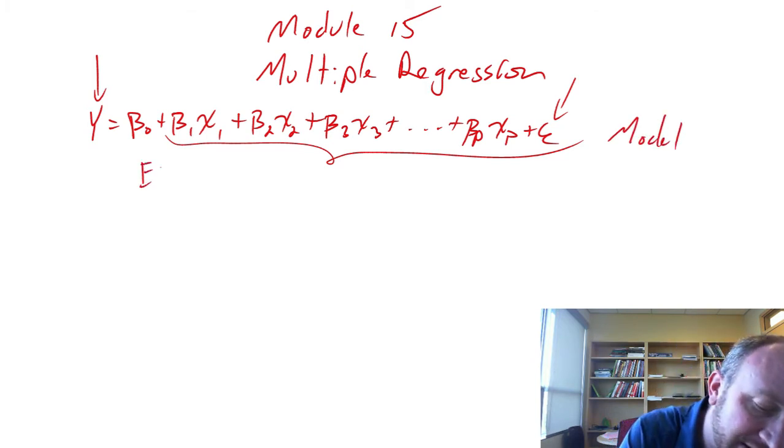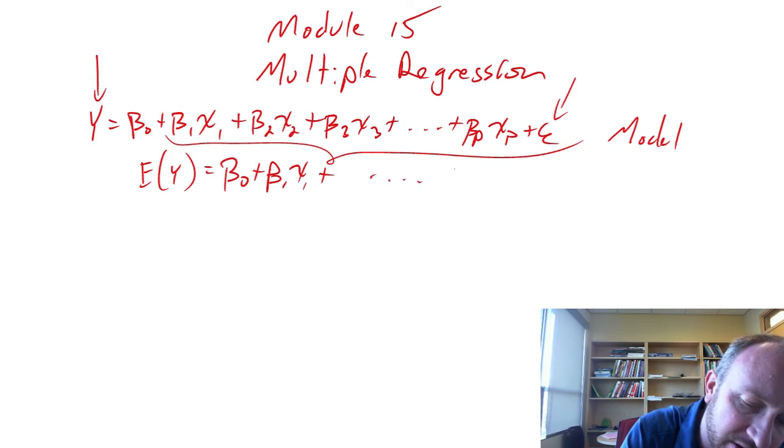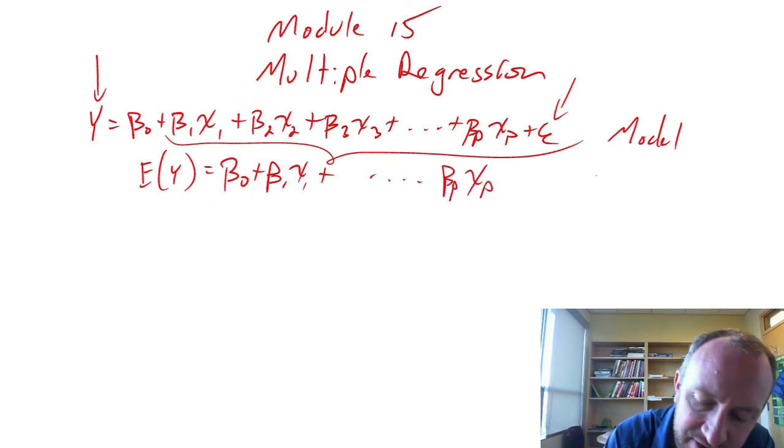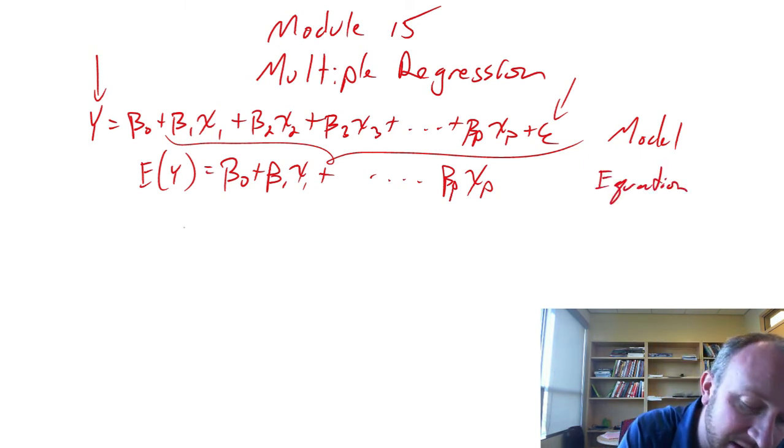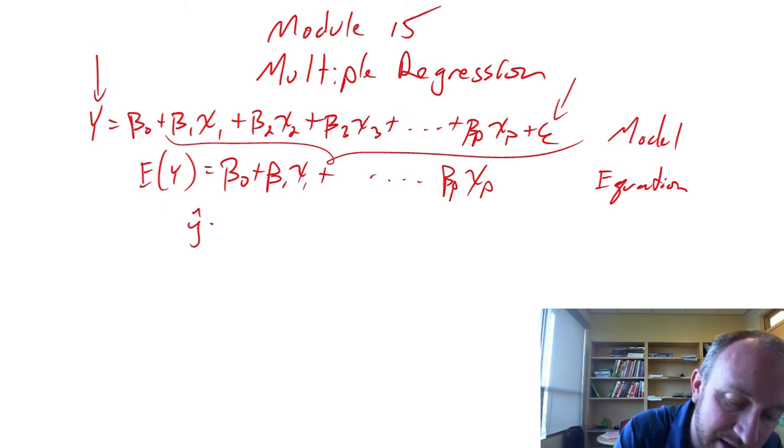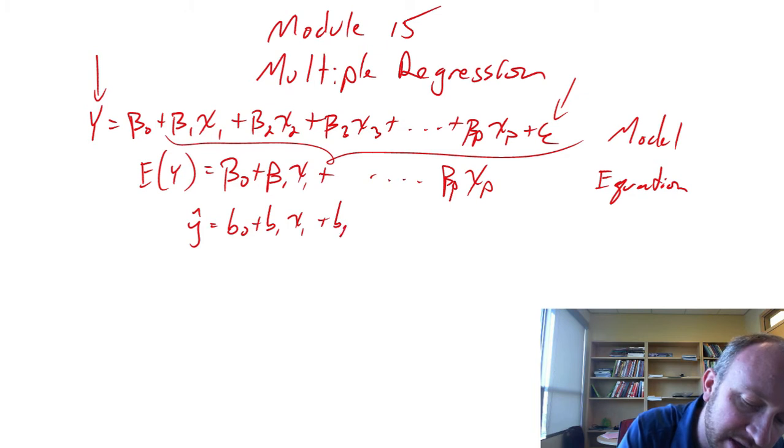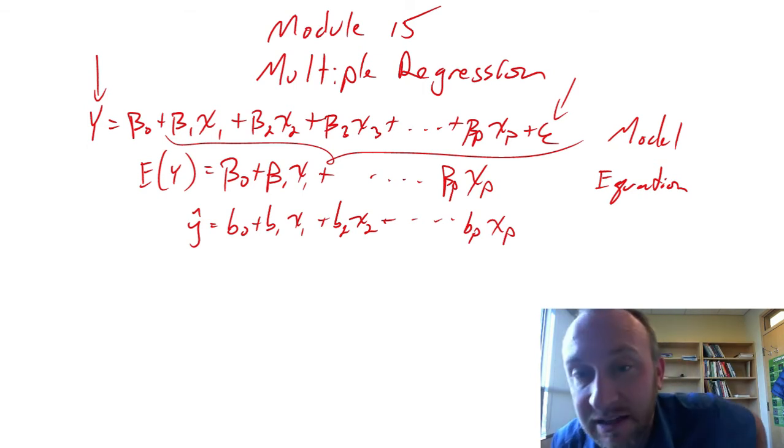The process here is the same. If we take the expected value of this b1 or beta 1 x1 plus on and on and on, beta p xp, so that gives us our regression equation. And this is the one that we want to estimate. So then we have our estimated regression equation b0, b1, b2 and on and on and on for all of those independent variables.